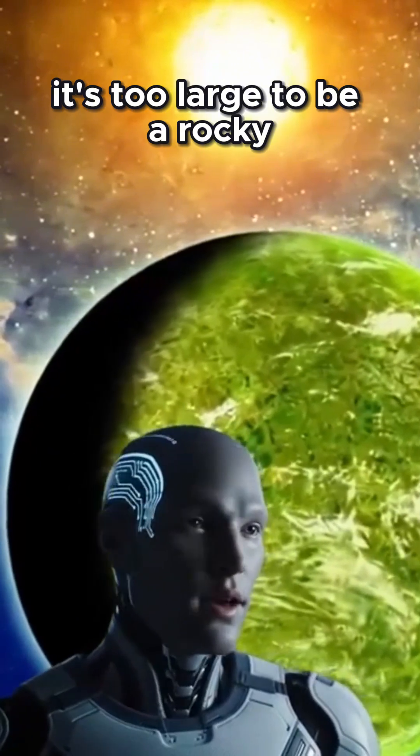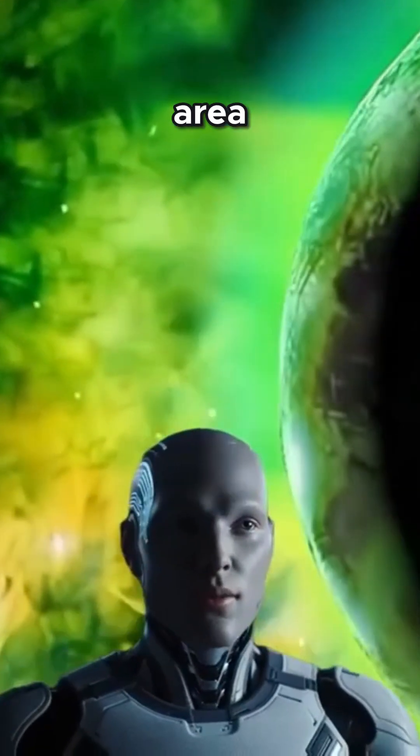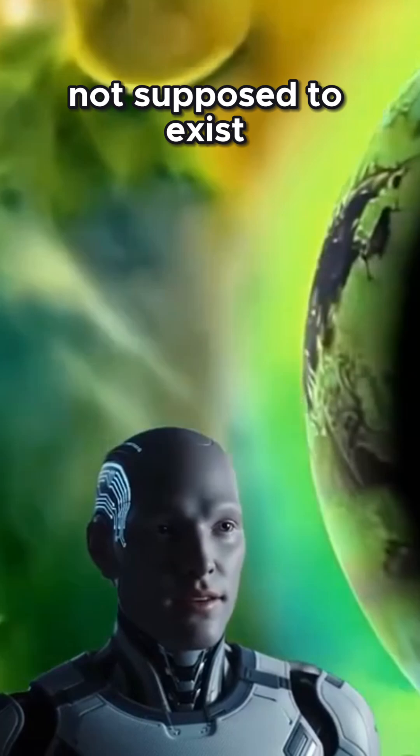It's too large to be a rocky planet and too small to be a gas giant. It falls right into a fuzzy area known as the Fulton Gap, a range where planets are theoretically not supposed to exist.